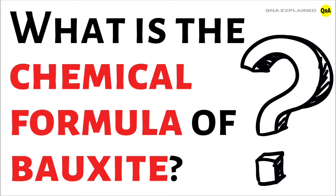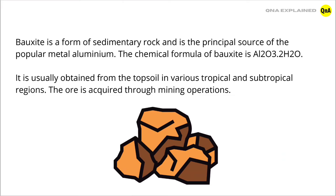What is the chemical formula of bauxite? Bauxite is a form of sedimentary rock and is the principal source of the popular metal aluminium. The chemical formula of bauxite is Al2O3 2H2O.